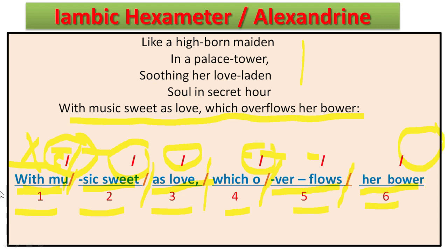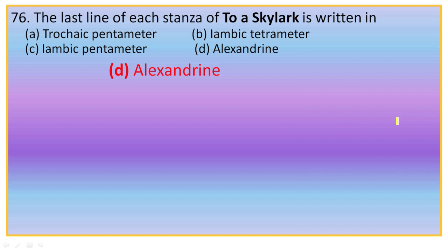Now for 'iambic': each foot has an unaccented syllable followed by an accented syllable — unaccent, accent. This pattern is called an iambus; 'iambic' is the adjective form. So iambus plus hexameter equals iambic hexameter, also called Alexandrine. The right option is D, Alexandrine or iambic hexameter.